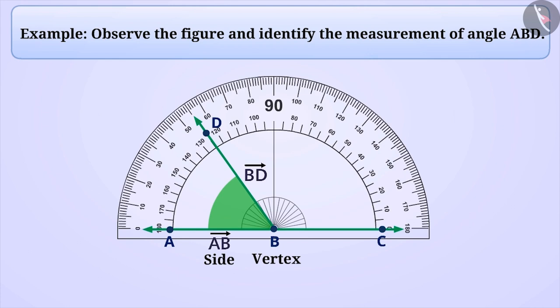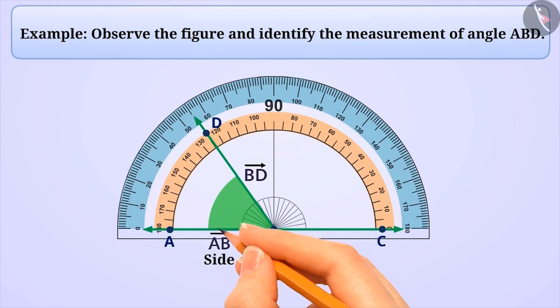Now let's measure the angle. Can you tell me which scale will be required for measuring the angle? Outward scale or inward scale? Think a little. Absolutely correct. We have to select the scale where side AB meets the sign 0 degrees. Since the side AB meets 0 of the outward scale, we will select the outward scale.